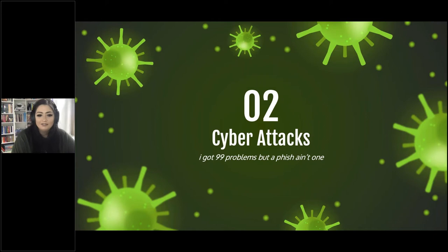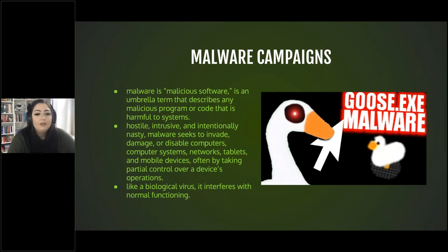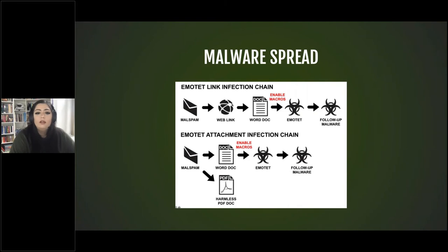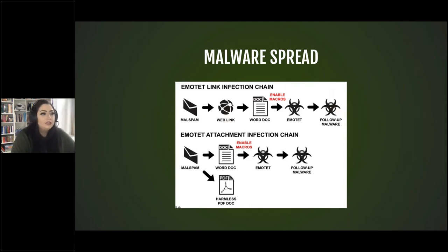Now let's talk about cyber attacks. Malware is malicious software — essentially an umbrella term for malicious programs or code that are harmful to systems. It tries to invade, damage, or disable systems and networks. Malware can be like a biological virus in that it interferes with regular functioning of a system. It spreads in several ways: one of the most common is via email, with people clicking on things they shouldn't. Attackers can be very good at making things look like they're coming from legitimate senders. Some malware exploits system vulnerabilities, causing users to inadvertently install it, and it can also be spread directly via USB. This is the Emotet infection chain — a super nasty type of malware that's been around for a while, usually exploited via links to malicious Word documents or attached malicious Word documents.